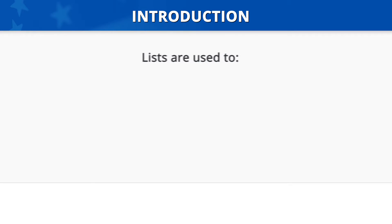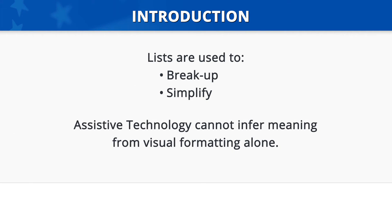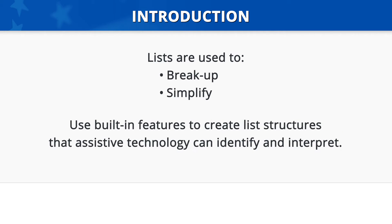Introduction. Lists are used to break up and simplify content. Assistive technology cannot infer meaning from visual formatting alone. An example of this is if you were to press the Tab key and use a dash as a bullet when making a list. However, using Microsoft's built-in list features creates the list structure that assistive technology can identify and interpret.